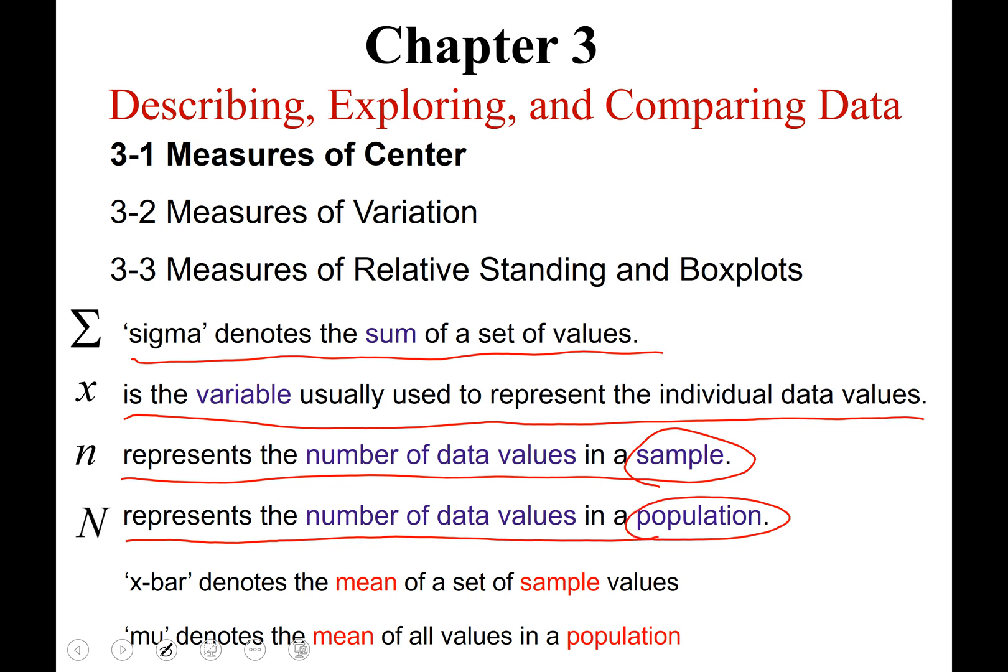So whenever you see the letter n, that's the number of data values. If it's uppercase, that's from the population; lowercase, it's from a sample of the population. The next one we read as x-bar, and it denotes the mean of a set of sample values. And the last one is pronounced mu, and it denotes the mean of all values in a population.